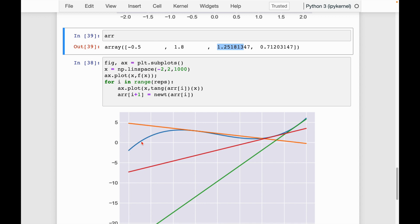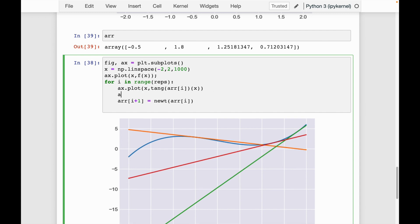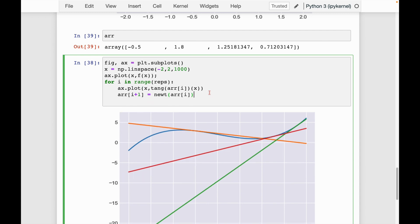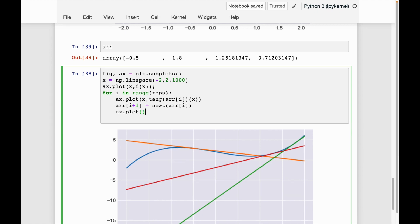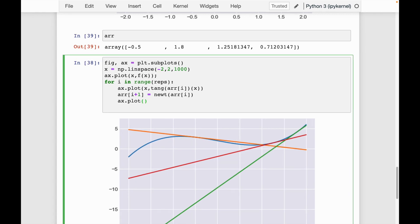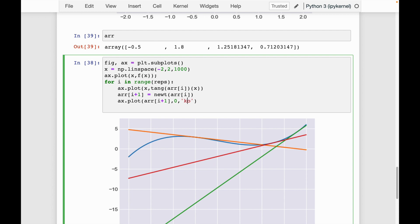So a couple of things that we can do to make this plot nicer. What if we plot all of the x points that have like kind of like every iteration of Newton's method, let's plot the x points that it gives us. So what we can do is I can say, let's do ax.plot. Now let's do arr of i plus one.